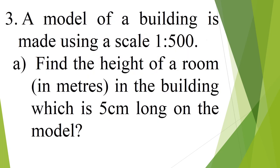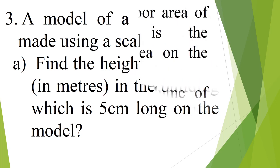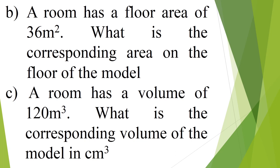Question 3: a model of a building is made using a scale 1 is to 500. Part A: find the height of a room in meters in the building which is 5 cm long on the model. Part B: a room has a floor of 36 m squared. What is the corresponding area on the floor of the model?